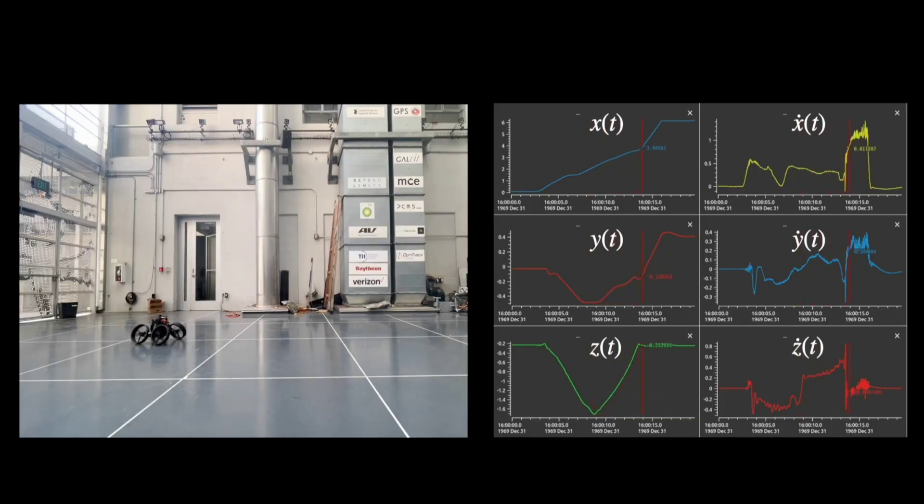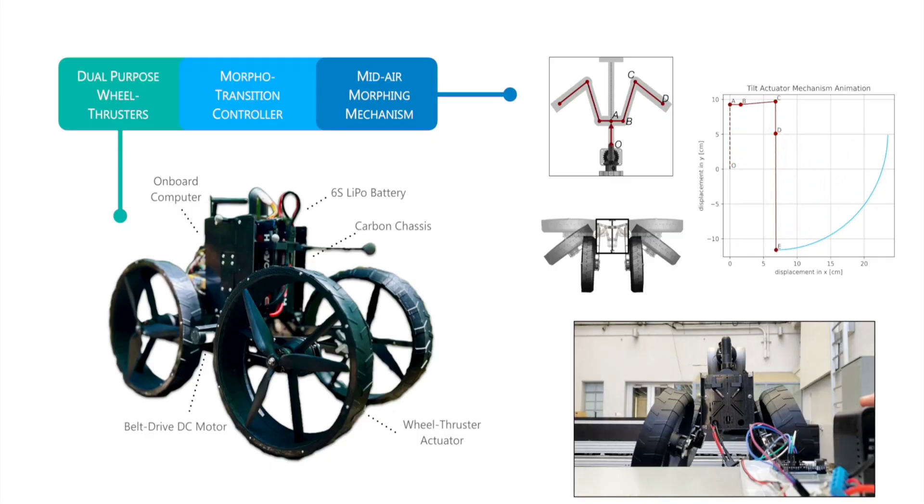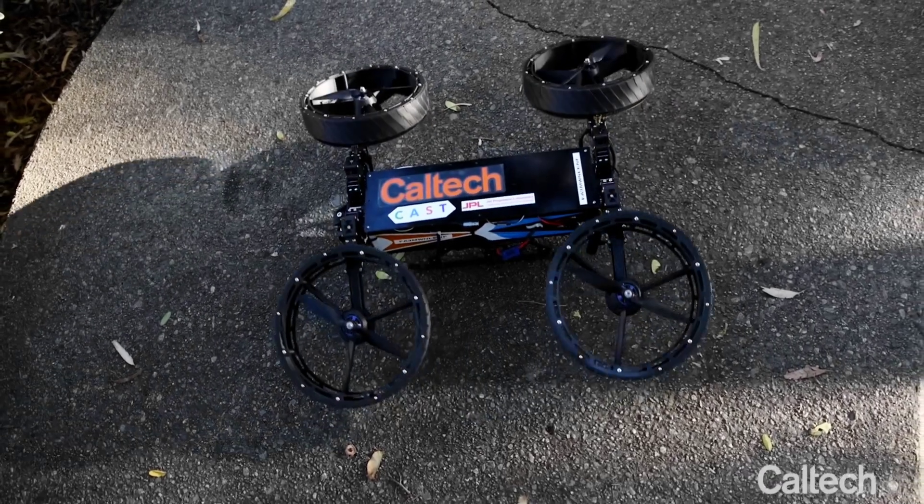The Otmo bot was designed to do just that, by performing its transformation in midair. Its name an acronym for Aerially Transforming Morphobot, Otmo was created by a team of engineers at the California Institute of Technology. The device builds upon the technology utilized in a previous Caltech robot, the M4.